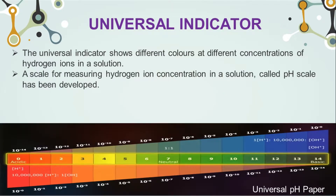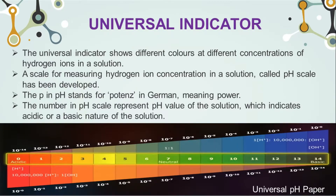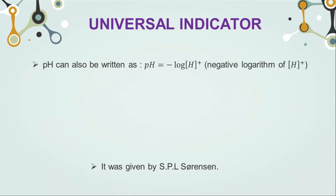A scale for measuring hydrogen ion concentration in a solution — the pH scale — has been developed. The 'p' in pH stands for 'potenz' in German, which means power. The numbers on the pH scale represent the pH value of the solution, which indicates the acidic or basic nature of the solution. pH can also be written as pH = −log[H+], that is the negative logarithm of H+ concentration, and it was given by S.P.L. Sørensen.